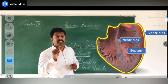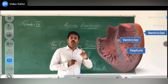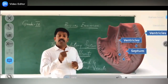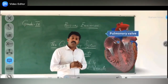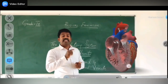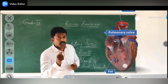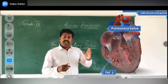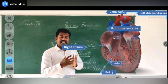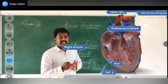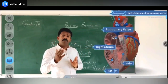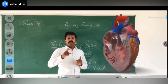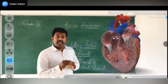From the right ventricle, with the help of the pulmonary artery — the only artery which carries impure blood — the impure blood is transported to the lungs. In the lungs, the blood gets oxygenated. With the help of the pulmonary vein, the oxygenated blood comes back to the heart.